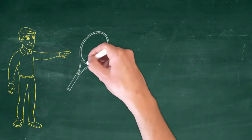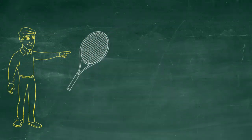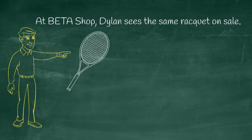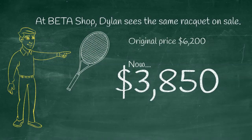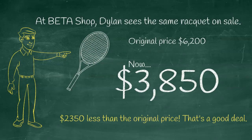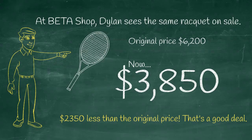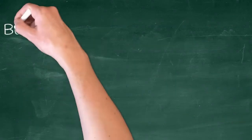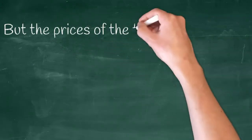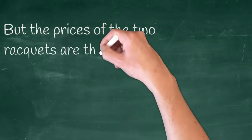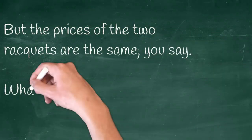At Beta Shop, Dylan sees the same racket on sale. Original price $6,200, now $3,850 — $2,350 less. That's a bargain. But the prices of the two rackets are the same. What's going on?